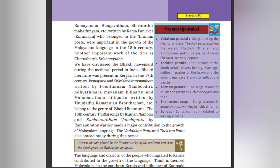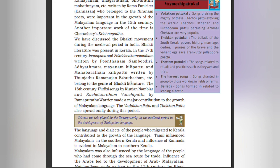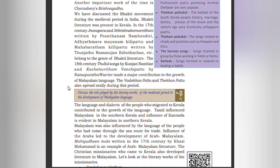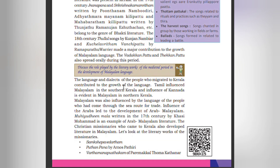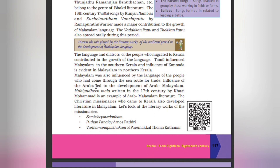Bhakti literature was also present in Kerala during the medieval period. The 17th century Jnanappana and Sri Krishna Charitam written by Poonthanam Nambudiri, Adhyatmaramayanam Kilippattu and Mahabharatham Kilippattu written by Thunchath Ezhuthachan belong to the center of Bhakti literature. 18th century Thullal songs by Kunjan Nambiar and Kuzhalppattu Manjuppattu by Ramapurathu Warrier made a major contribution to the growth of Malayalam language. Vadakkan Pattu and Thekkan Pattu spread orally during this period. Languages and dialects of people who migrated to Kerala also contributed to the growth of the language. Tamil influenced Malayalam in southern Kerala; influence of Kannada is evident in northern Kerala. Influence of the Arabs led to the development of Arabi Malayalam; Muhyidin Mala, written in the 17th century by Kasi Muhammad, is an example of Arabic Malayalam literature.